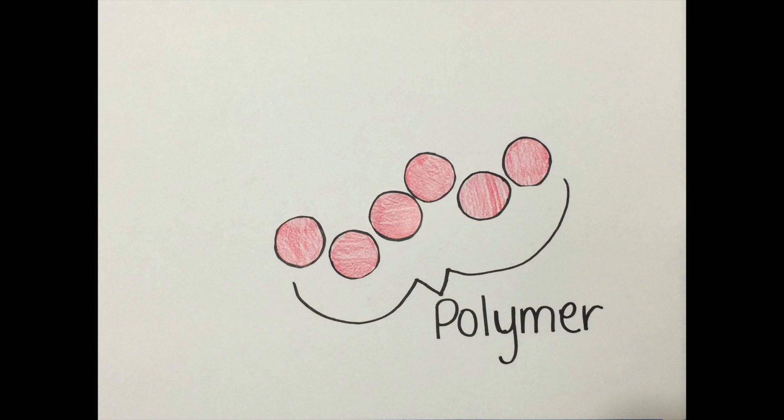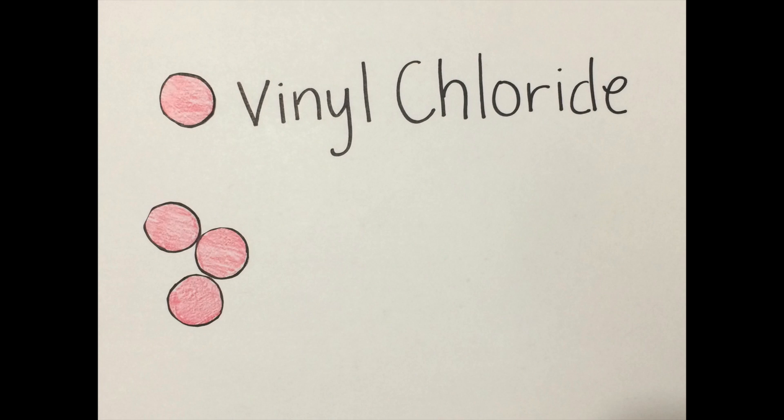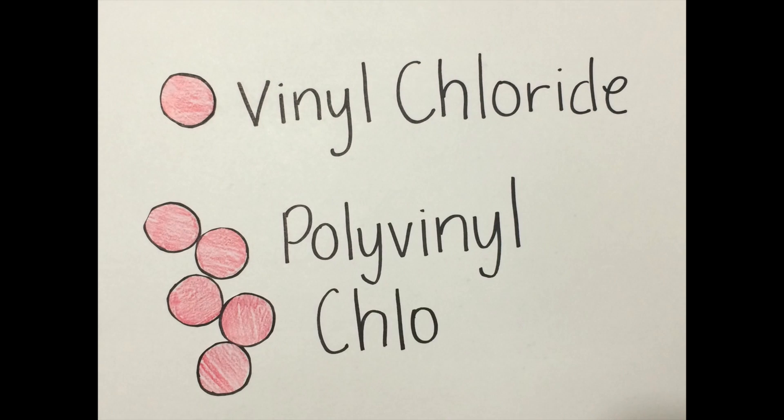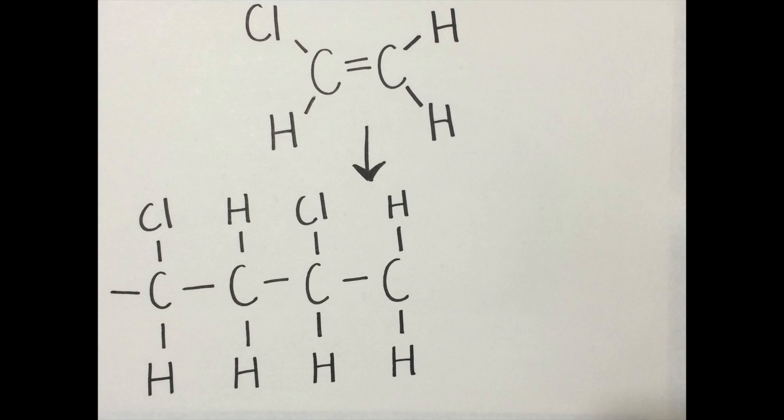So the monomer is vinyl chloride, and lots of vinyl chlorides make the polymer polyvinyl chloride. This is vinyl chloride, and this is how vinyl chloride bonds with itself to create polyvinyl chloride. Now let's talk about how vinyl records are made.